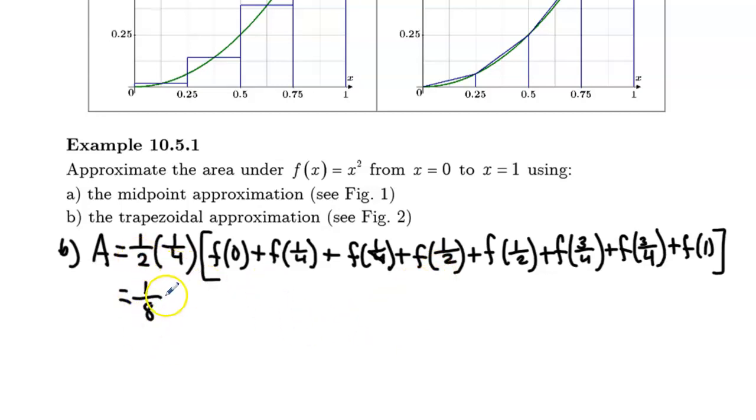So this is one eighth, one half times one quarter. f at 0 would, of course, be 0 squared. f at a quarter would be a quarter squared. But now, since I've got f at one quarter here and f at one quarter there...